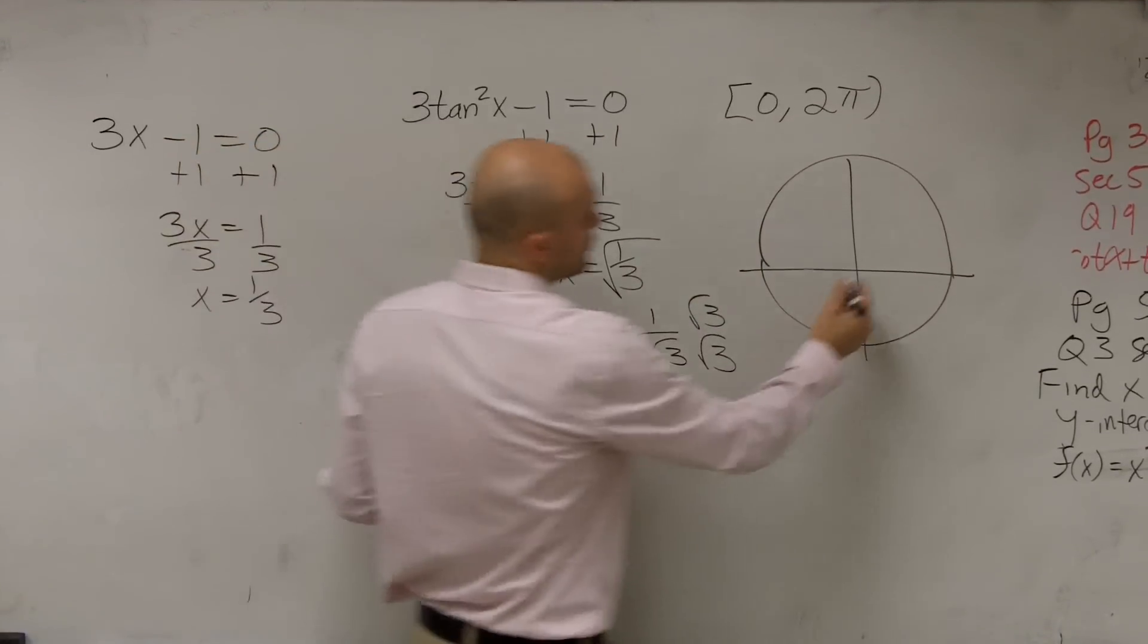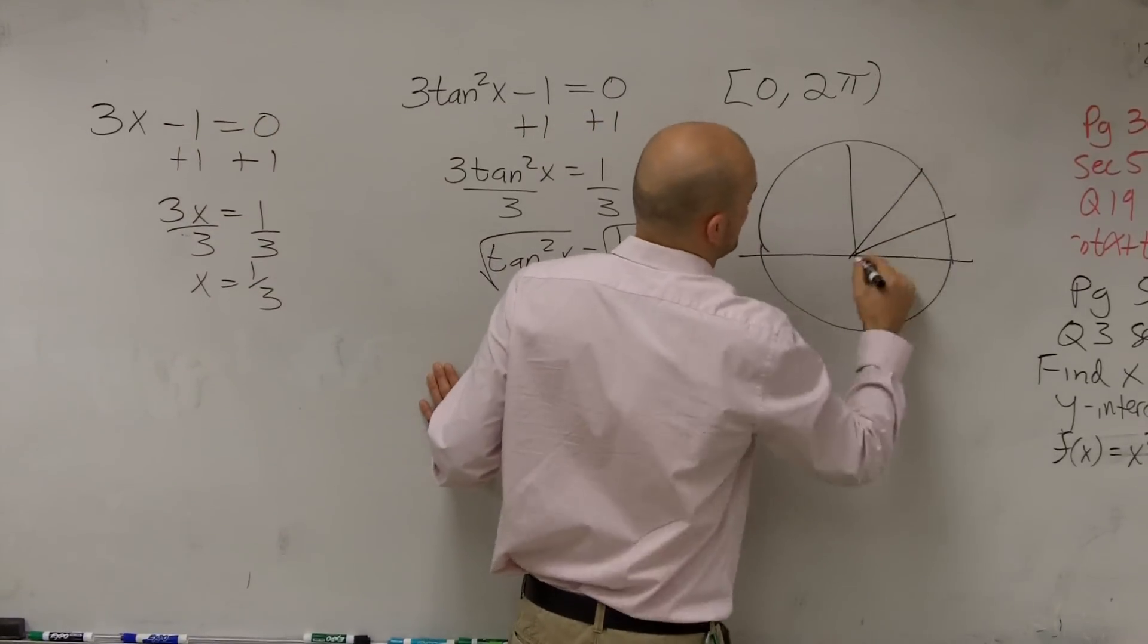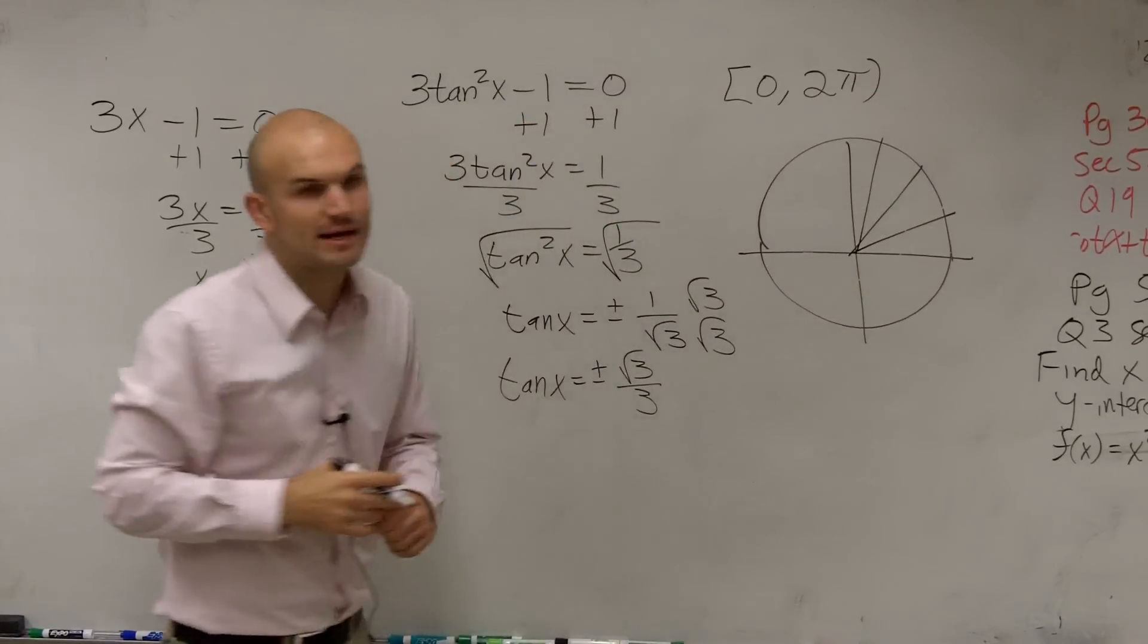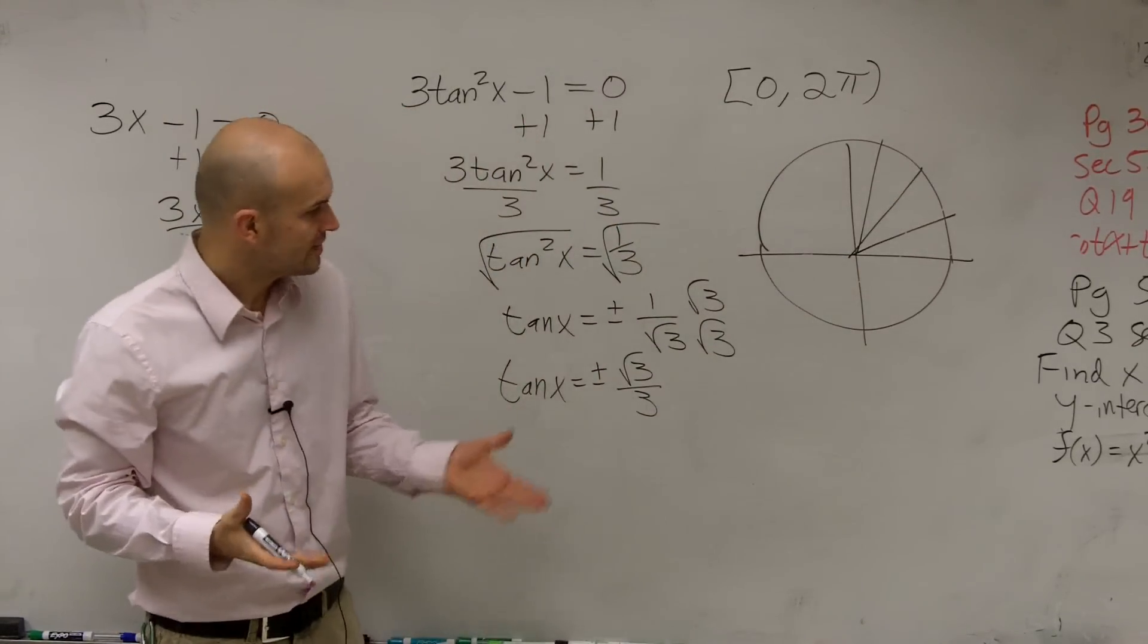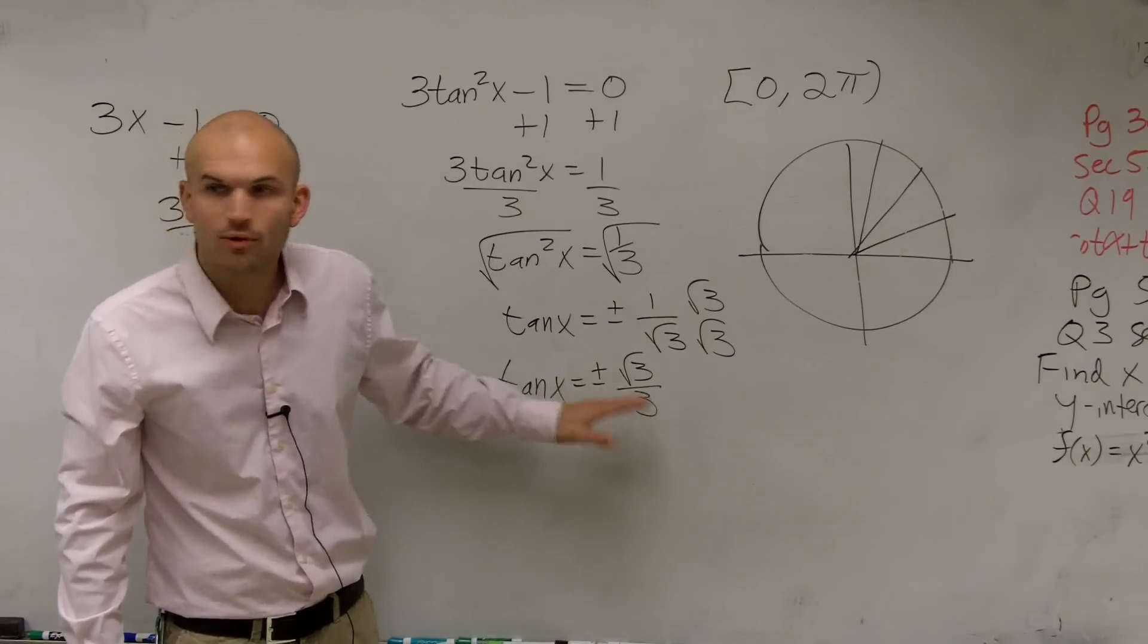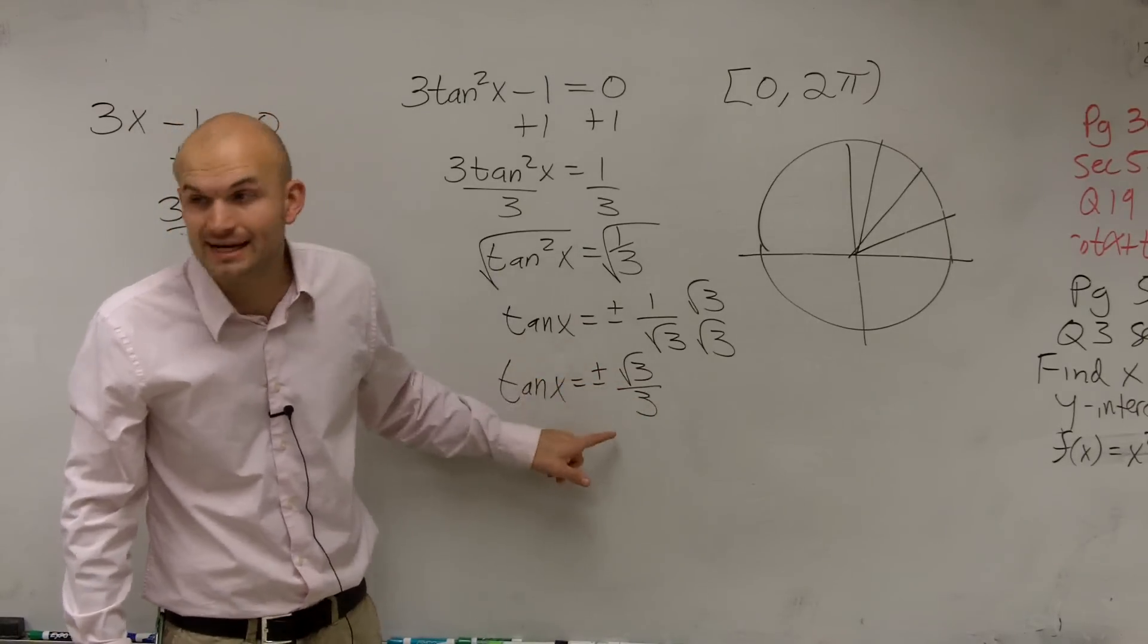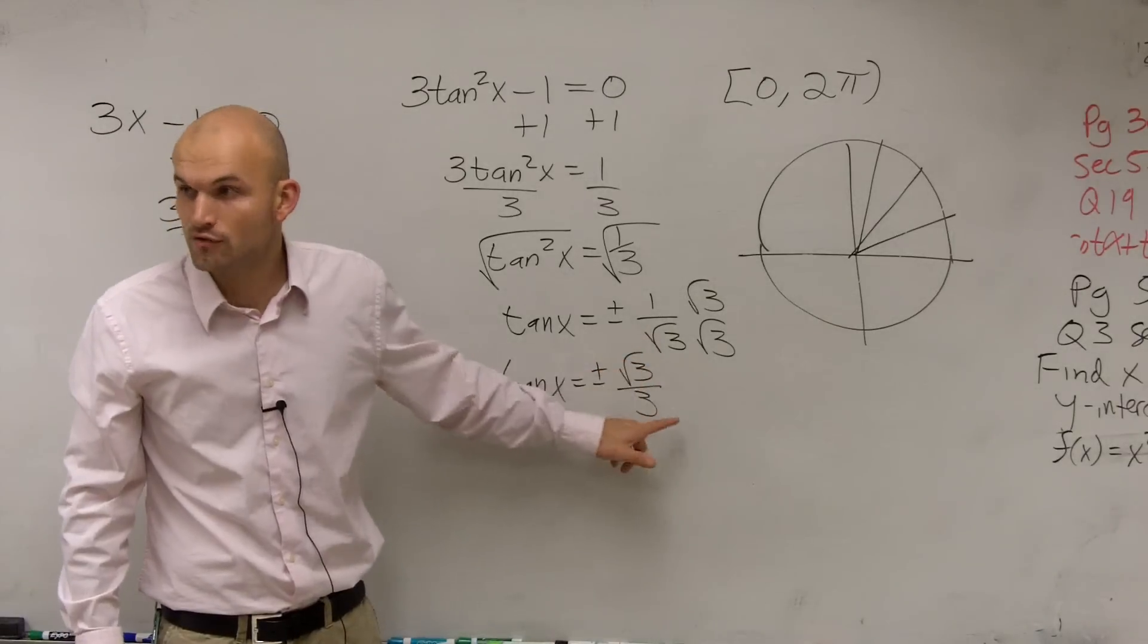So remember, on our unit circle, we're dealing with the first quadrant. There's kind of our three main important points that we're going to be dealing with. And what I want to know is, out of these angles, which points are going to provide me with plus or minus the square root of 3 over 3?